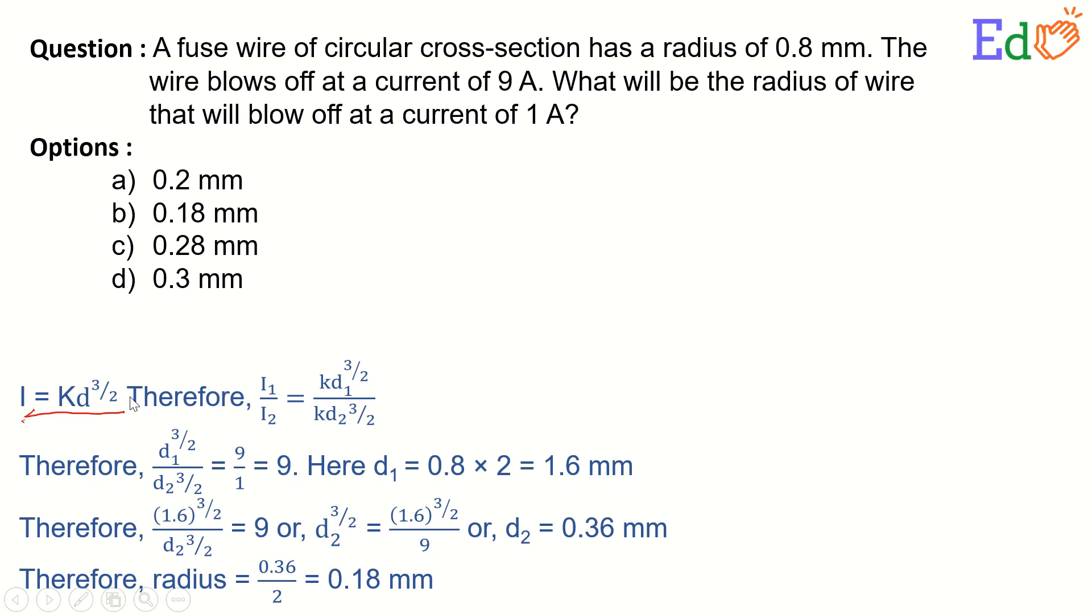And we can take the ratio of two options, I1 by I2, and we can proceed on. At least we can find out the radius related to 1 Ampere, which is found to be 0.18 mm.